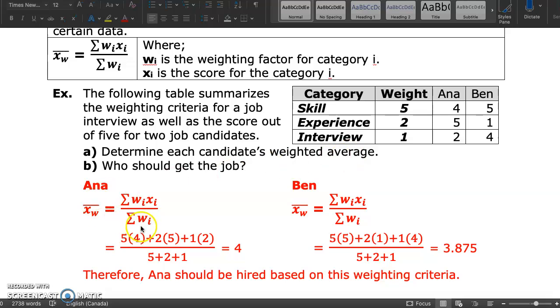We'll go through Ana. The weighted mean for Ana: take the weight times the actual score. That's five times four, two times five, and one times two. We add them together, divided by the sum of the weights. So five plus two plus one. And when we calculate this value, it's equal to four. So based on this criteria, it assigns more importance to certain characteristics.